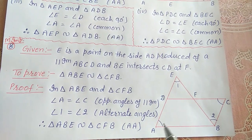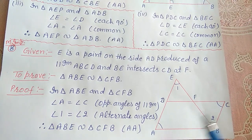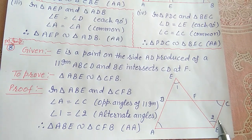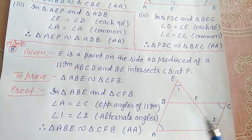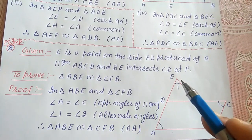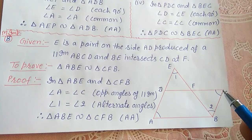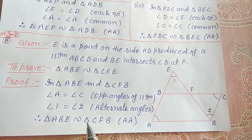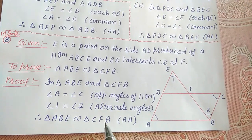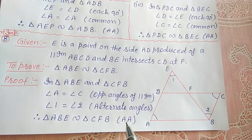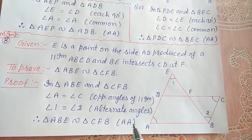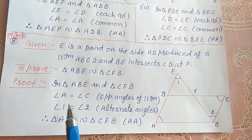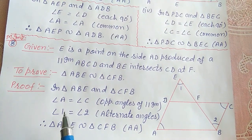Angle A is equal to angle C as these are opposite angles of a parallelogram. Angle 1 equals angle 2 as alternate angles because AE is parallel to BC. Therefore, triangle ABE is similar to triangle CFB by AA criterion of similarity. यह question exam की दृष्टि से important है। Thank you.